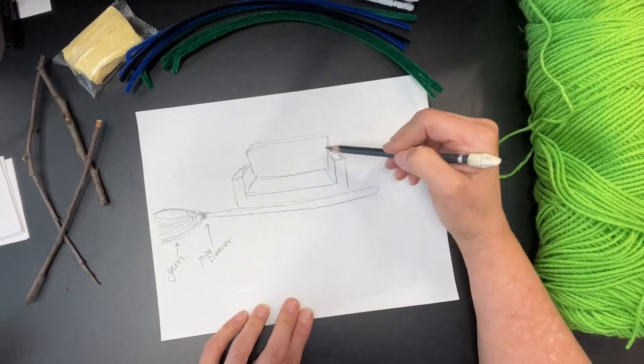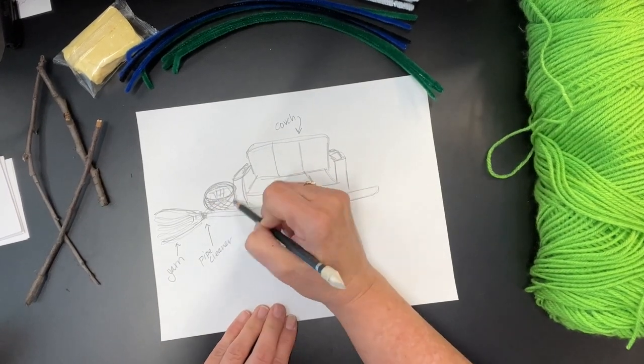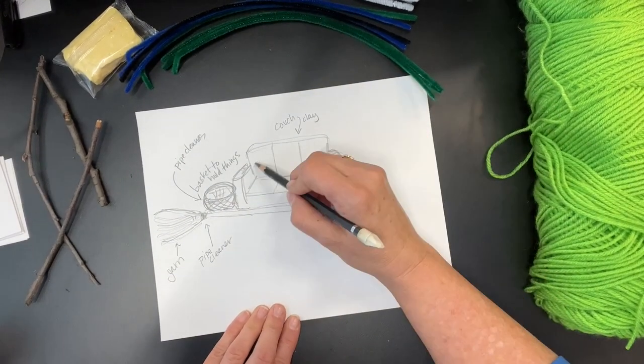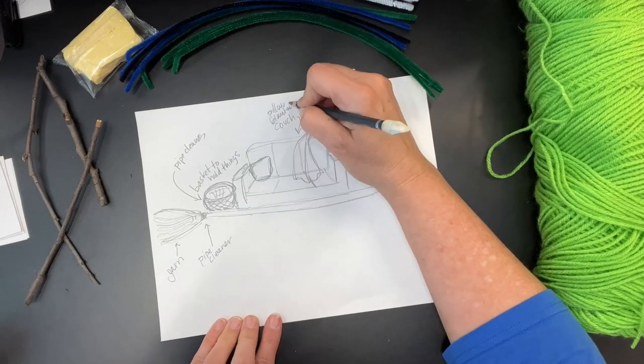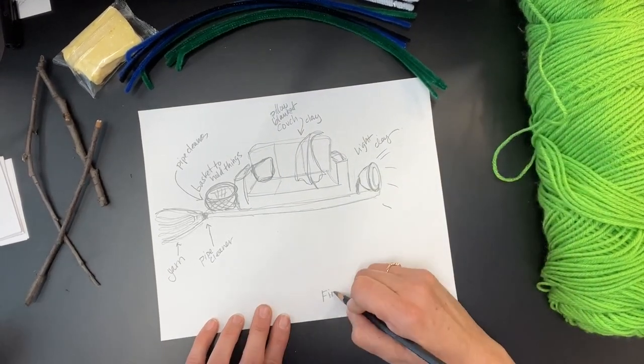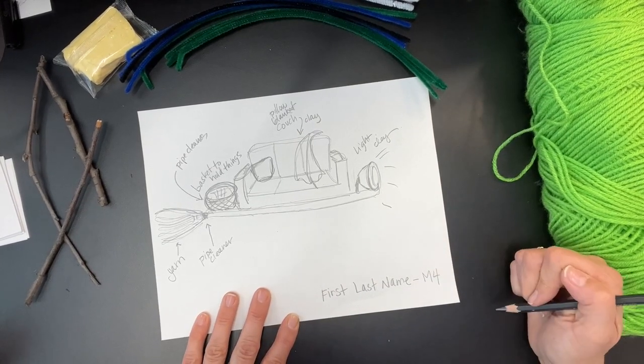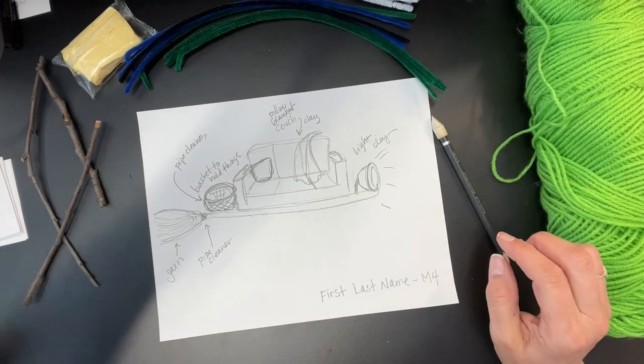I want to have a couch on my broom, a basket to hold things, a blanket and pillow, and a light on the front. That's what I started with. You have to add your first and last name and your room number. I do like if you can add your table color also.